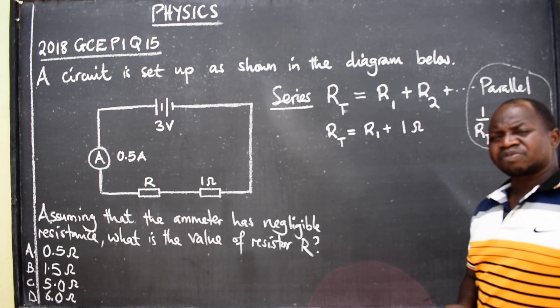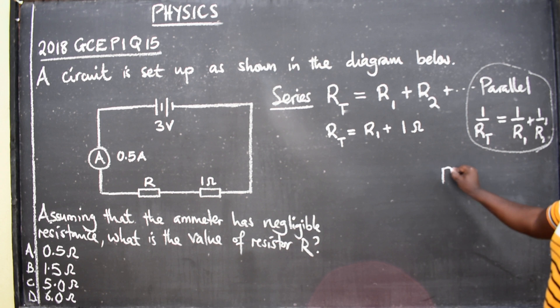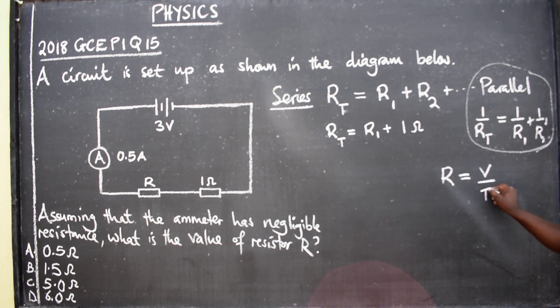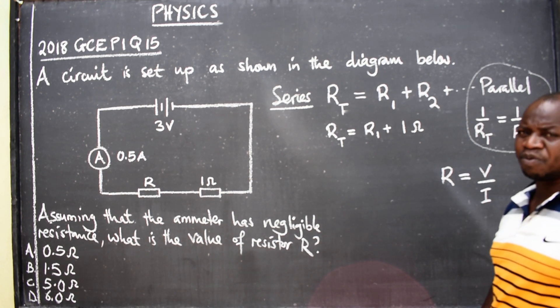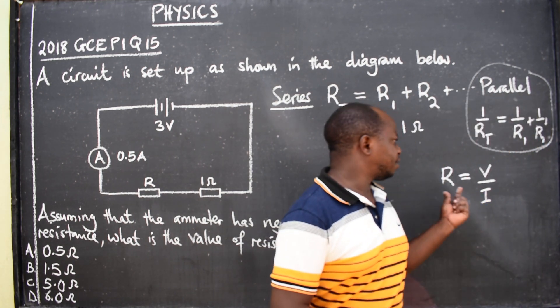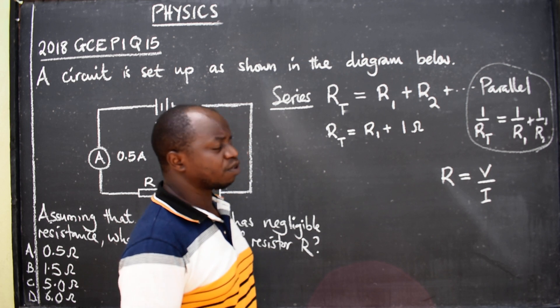According to Ohm's law, we are saying resistance is equal to voltage over current. This is the formula. So here, resistance is equal to voltage over current.